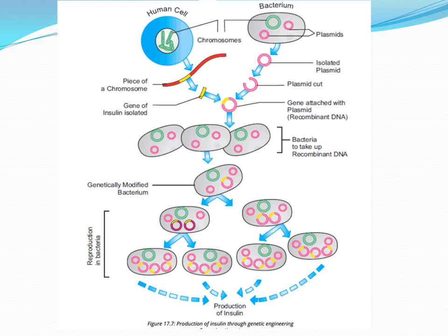The expression of the gene results in the formation of protein — insulin is basically a protein in nature. If the desired protein, insulin, is formed, it shows successful expression of the insulin gene. If it is not formed, the gene may not be properly attached to the plasmid, or the bacteria may have died due to unavailability of proper food or medium. If the gene does express, millions of copies of the DNA will be formed, producing insulin that can be collected in bottles and sold.